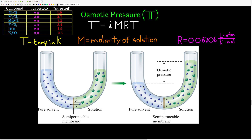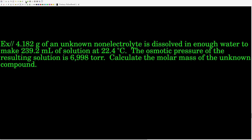The equation that describes osmotic pressure is: pi equals the Van't Hoff factor times the molarity (capital M) times the gas constant R (0.08206 liters atmospheres per Kelvin mole) times the temperature in Kelvin.